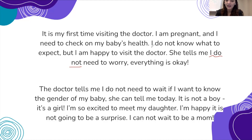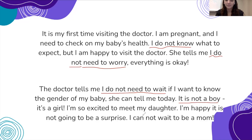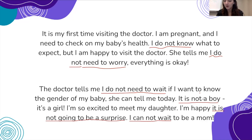So the examples: 'I do not know,' 'I do not need to worry,' 'I do not need to wait,' 'it is not a boy,' 'it is not going to be a surprise,' and 'I cannot wait.' These are all examples of where you might see 'not' and 'do not' in sentences. Practice when you are reading in English or watching or listening to TV — where do you hear the word 'not'?